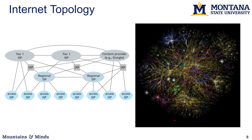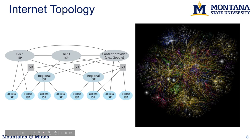Looking at internet topology as a whole, it basically looks like a network with many cross-links. You can see a hierarchical effect with tree-like structures at the edge, but the core is pretty well interconnected.